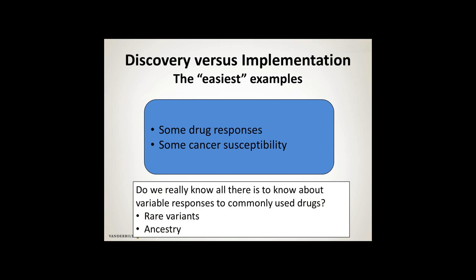The easiest examples are in drug responses and cancer susceptibility. You might say we understand the pharmacogenomics of clopidogrel, warfarin, or simvastatin, and therefore we don't need to study them anymore - we just need to implement them. The same goes for some of the commoner cancer susceptibility areas. But the real question is: do we really know all there is to know about variable responses? I'm going to make the case over the next slides with an old drug that there's a lot we don't know, partly because we've been limited in the size of data sets we've been able to study.